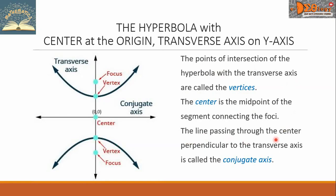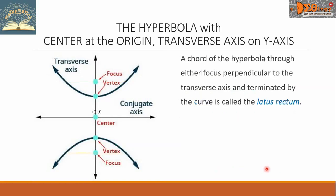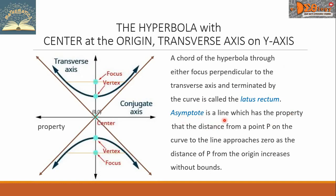The line passing through the center perpendicular to the transverse axis is called the conjugate axis. A chord of the hyperbola through either focus perpendicular to the transverse axis and terminated by the curve is called the latus rectum. An asymptote is a line which has the property that the distance from a point P on the curve to the line approaches zero as the distance of P from the origin increases without bounds.